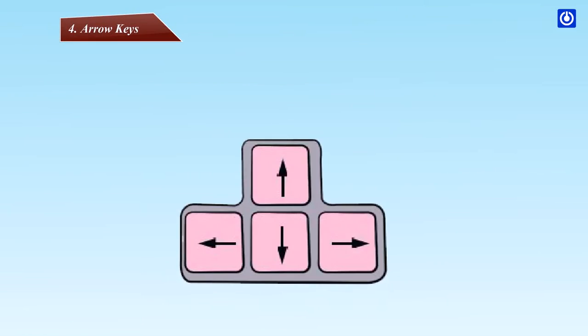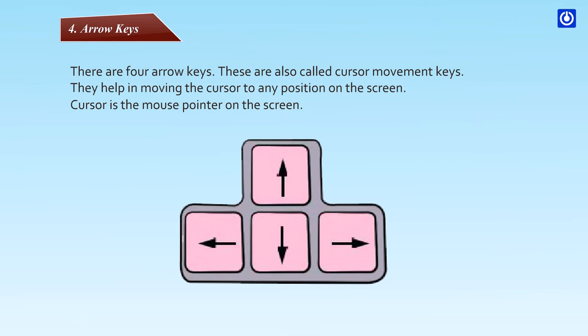Arrow keys: There are four arrow keys. These are also called cursor movement keys. They help in moving the cursor to any position on the screen. Cursor is the mouse pointer on the screen.